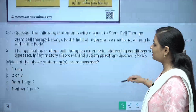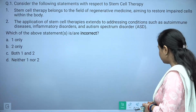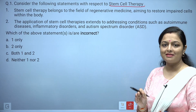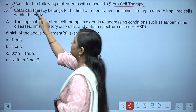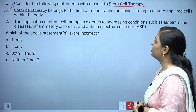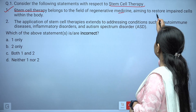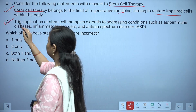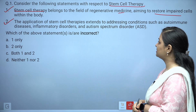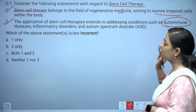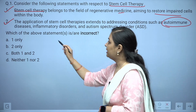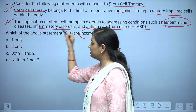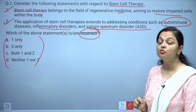Now let's get started with the questions. The very first question is related to stem cell therapy. Statement one: stem cell therapy belongs to the field of regenerative medicine, aiming to restore impaired cells within the body. Statement two: the application of stem cell therapies extends to addressing conditions such as autoimmune diseases, inflammatory disorders, and autism spectrum disorder. How many of these are incorrect?